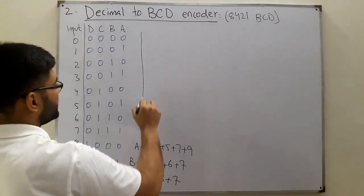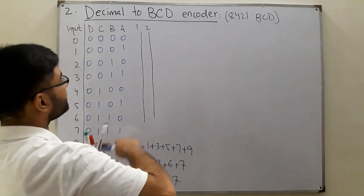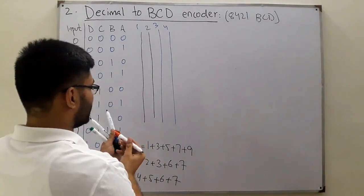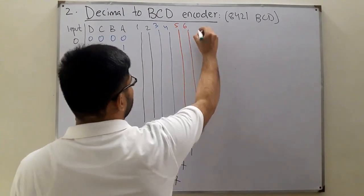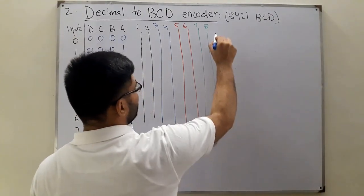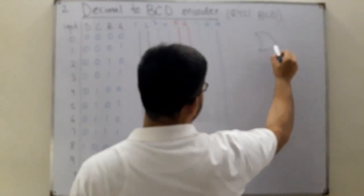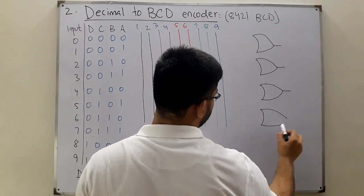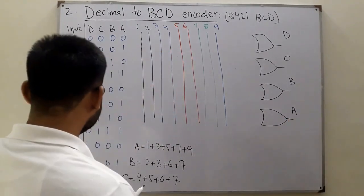Now how do you draw the logic diagram? You have inputs one through nine. You need four OR gates - one for A, one for B, one for C, and one for D. Going in order D, C, B, A - where D is the most significant bit.